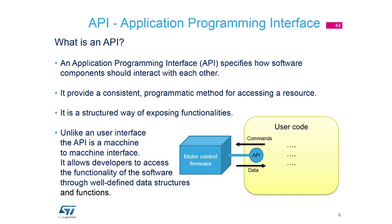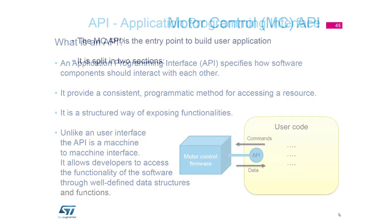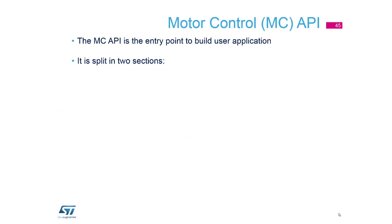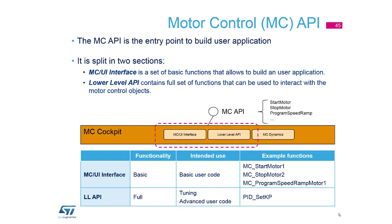We have our motor control firmware library, and we have to send some commands and receive some information and data from the application. We can split this into two sections: one is the motor control user interface — a basic level for how to start the motor and so on — and the second one is a lower-level programming interface.